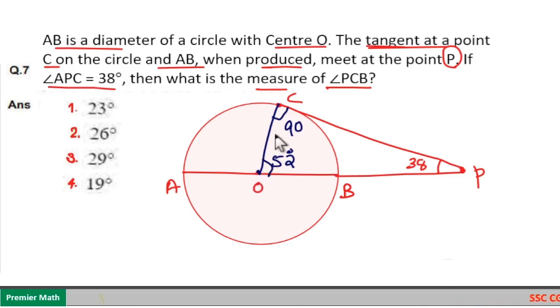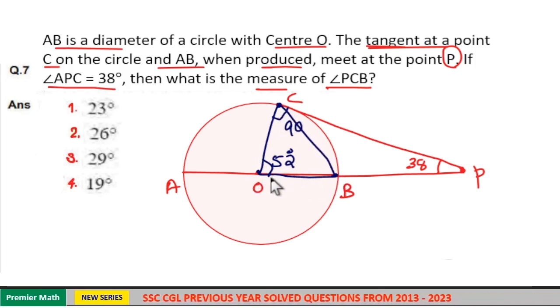And here this is point C, this is point B. If you join it, this is a triangle. And here this is radius and this is also radius. These two are equal.